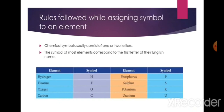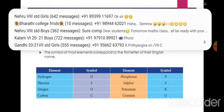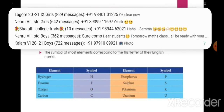Rules followed while assigning a symbol to an element: a chemical symbol usually consists of one or two letters. The symbol of most elements corresponds to the first letter of their English name. For example, hydrogen uses the symbol H, fluorine uses F, oxygen O, carbon C, phosphorus P, sulfur S.